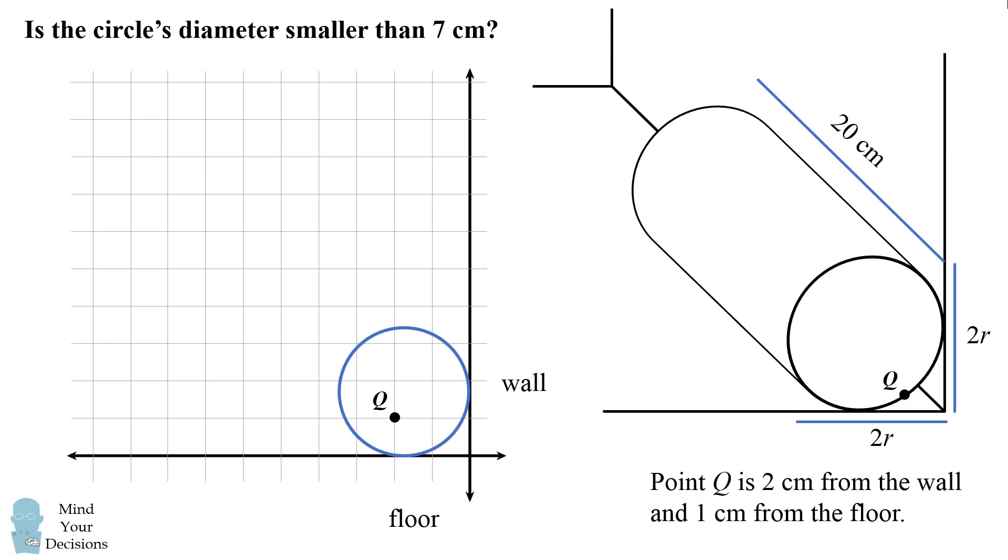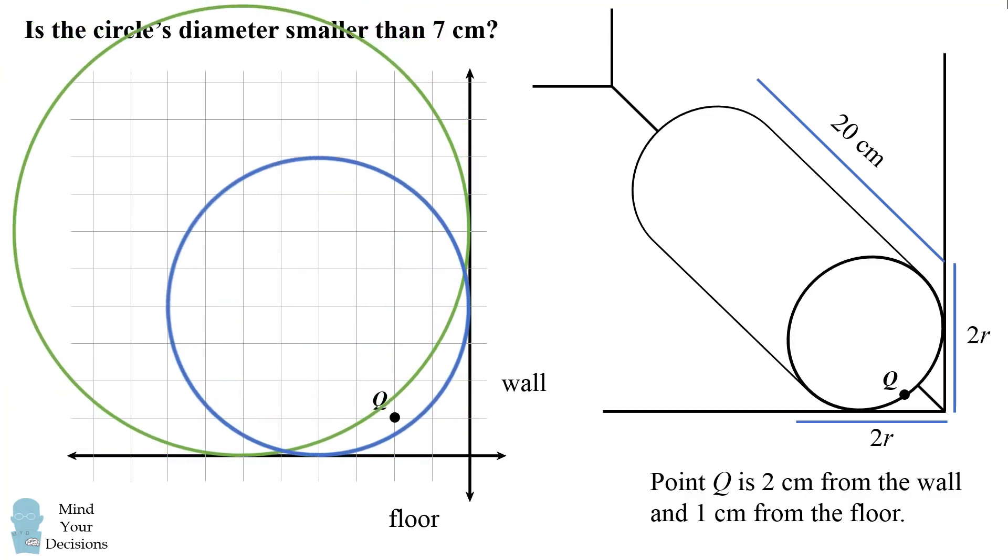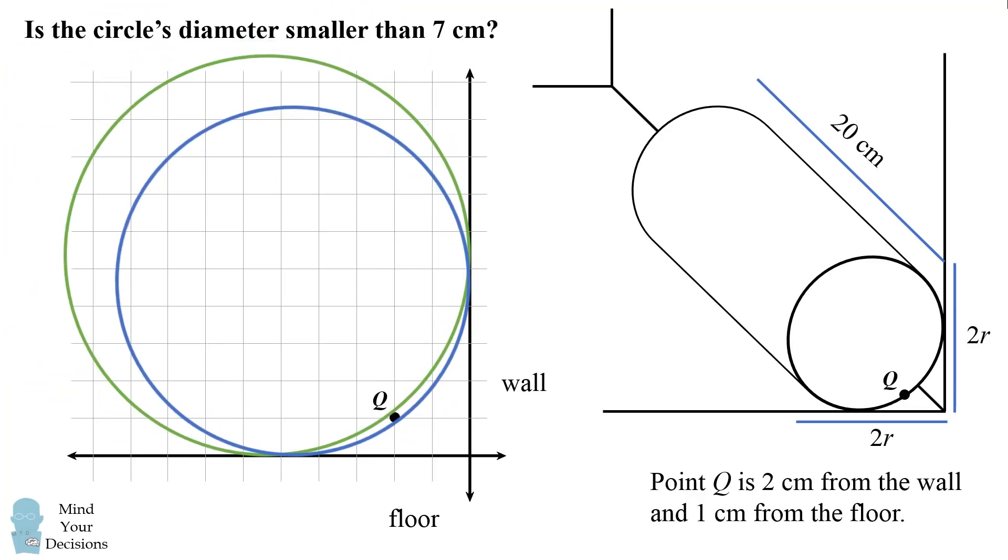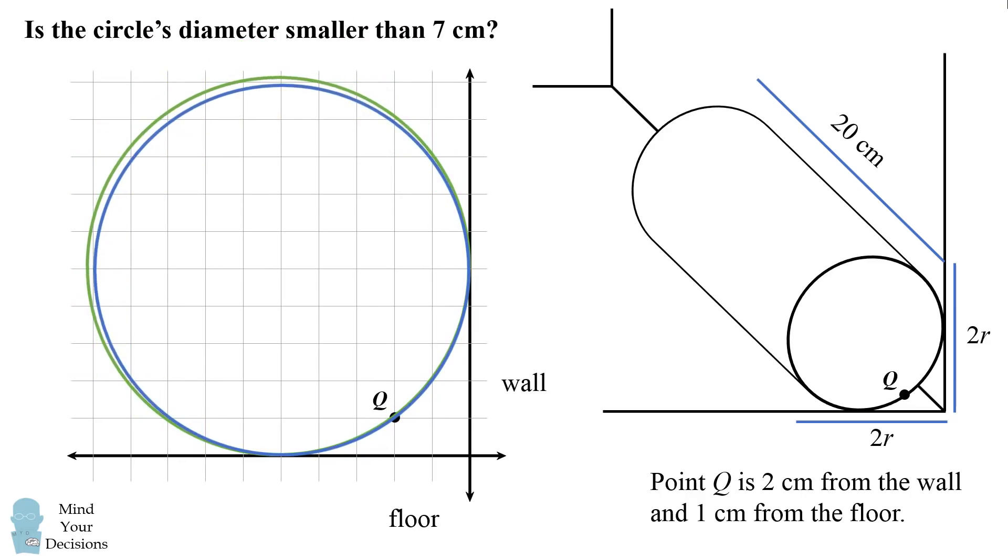So what kind of circle would touch both the floor and the wall and pass through point q? Well, let's try and numerically estimate this. Here's a circle that contains q, it touches the wall and the floor, but it's not exactly passing through q. And here's a circle that's touching the wall and the floor that's too big. So let's use a computer simulation to imagine growing the blue circle and shrinking the green circle to get exactly what kind of circle we would need that passes through q and touches both the floor and the wall. It turns out there is a unique circle with this property.